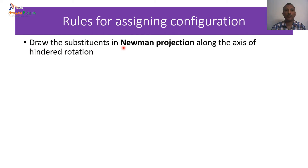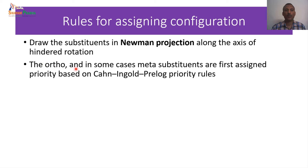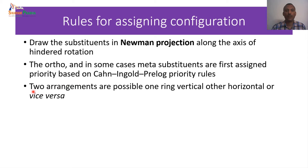Let us look at the rules for assigning configuration to atropisomers. First, draw the substituents in a Newman projection along the axis of hindered rotation. Then, the ortho and in some cases the meta substituents are assigned a priority based on the Cahn–Ingold–Prelog (CIP) priority rule — which we are already familiar with: highest priority based on atomic number, isotopes also get priority. There are two arrangements possible: one ring vertical and the other horizontal, or vice versa.